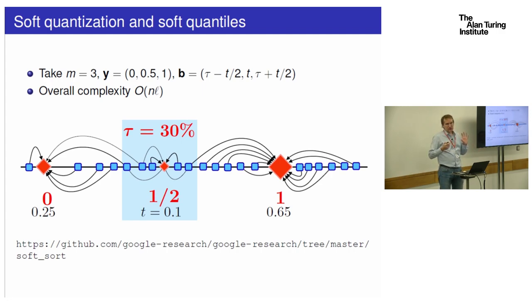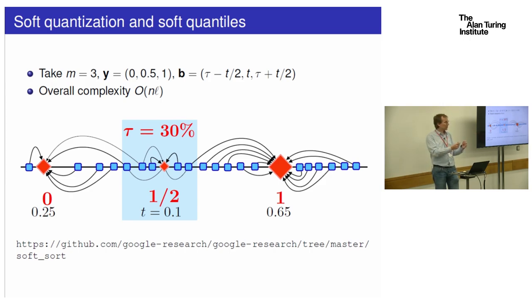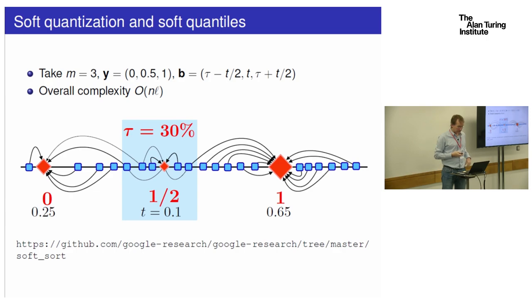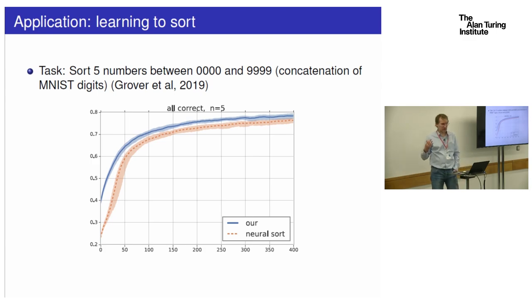The same idea can be applied if you're not interested in ranking the full vector, but in computing the median, or separating into top 5% and bottom 95%. There is a nice way to express that in terms of optimal transport: instead of transporting n data points to n endpoints, you transport to just two or three points. This provides a systematic way to extract the top-K entries in a vector, which could be used in a loss function that checks whether the correct label is in the top K. We implemented this; the code is available, and on many tests like top-K losses or learning to sort, we obtain promising results.